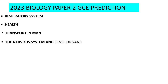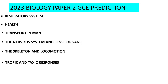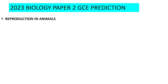The Nervous System and Sensory Organs appears to be one of the topics that does not miss in the examination. The Skeleton and Locomotion has also been coming from 2015 to 2022 and is one of the key topics. Tropic and Tactic Responses haven't been coming as often, so I consider there's a probability of a question from this part. Asexual Reproduction also hasn't featured much, so I expect a question from it this year. Reproduction in Animals has been coming fairly often as well.